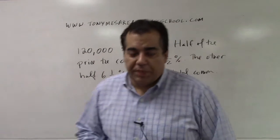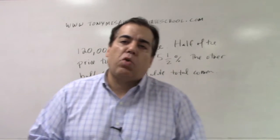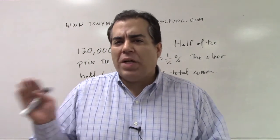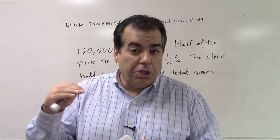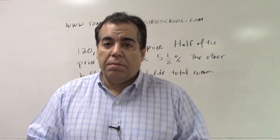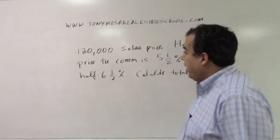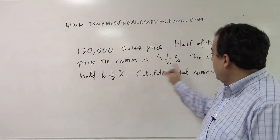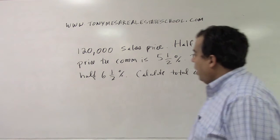Hi, I'm Tony Mesa with Tony Mesa Real Estate School and we're going to do another commission problem. This is called a graduated commission problem. This is more common in commercial real estate — once you hit a certain price, the commission percentage over that price is higher. This is called a variable or graduated commission. In this example: $120,000 sales price, half the price at 5.5% commission, the other half at 6.5%. Calculate the total commission.